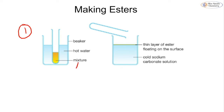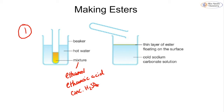The first step is to take a mixture of ethanol and ethanoic acid in small amounts, then add a couple of drops of concentrated sulfuric acid as a catalyst, because this reaction is very slow at room temperature. We then place it into hot water to help speed it up and leave it for about 10 to 15 minutes to allow the reaction to start making some ester and reach equilibrium.